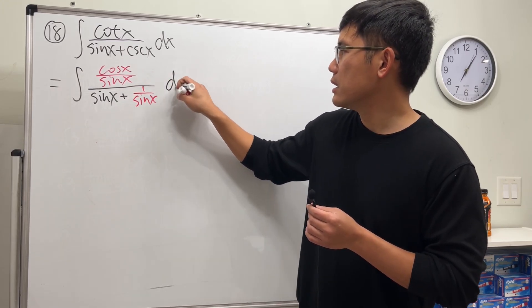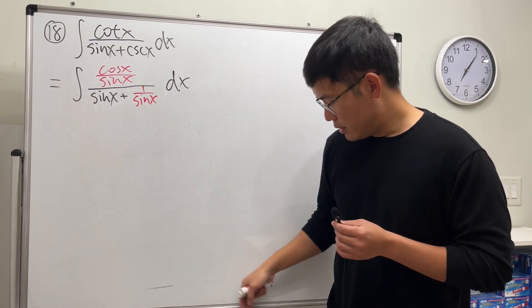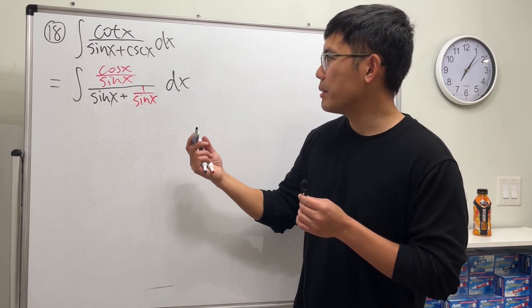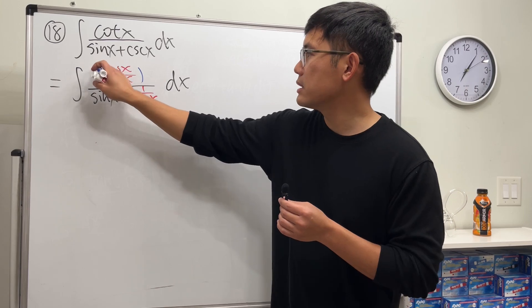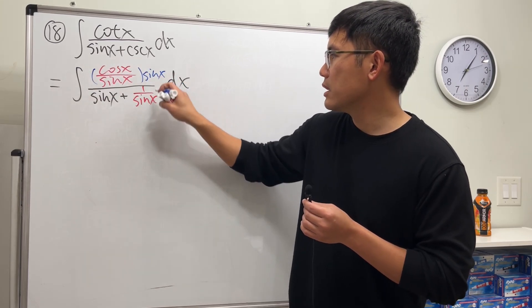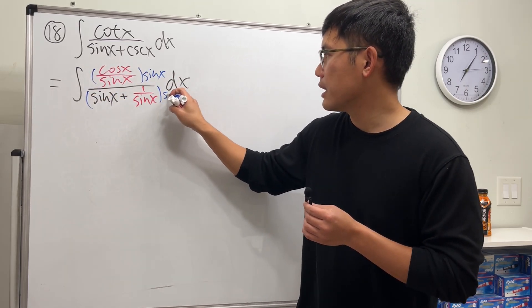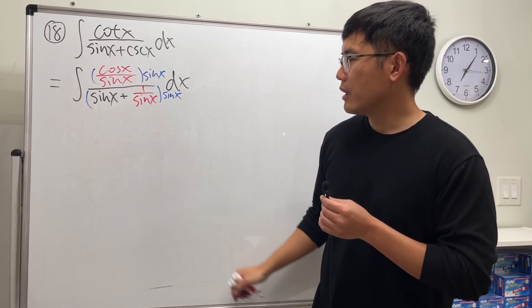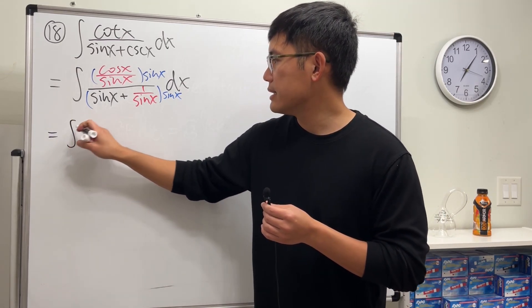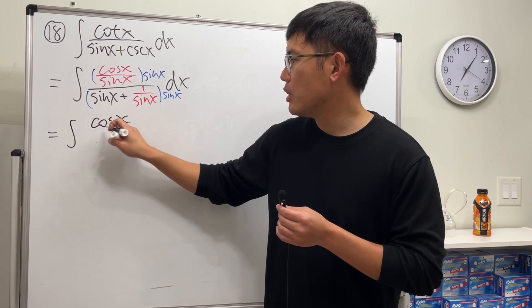Okay, let's multiply the top and bottom by sine x and see what happens. So sine x here and also let's multiply sine x here. We are looking at cosine x on the top over sine squared x, and this and that is just 1.